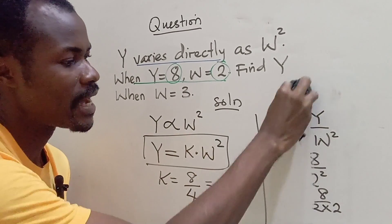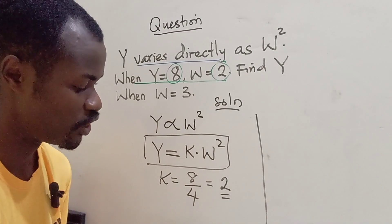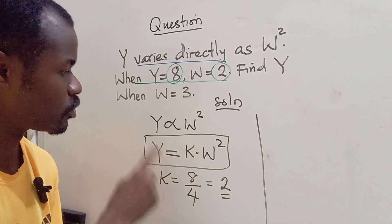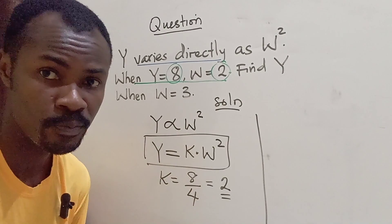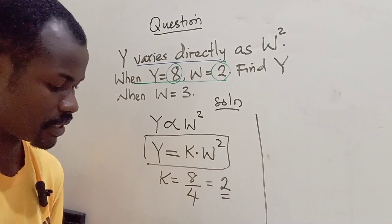Now we are going to find the law or the relationship between Y and W. Now the relationship is simply this.